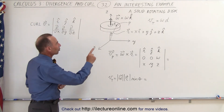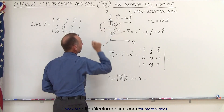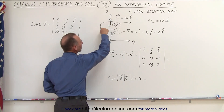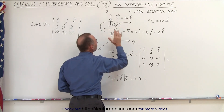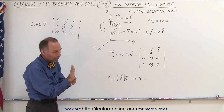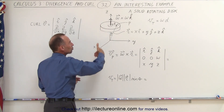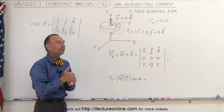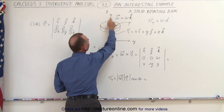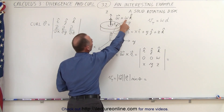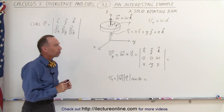Let's say we have a solid rotating disc where the axis of the disc is on the z-axis. The disc is rotating with an angular velocity omega. When we write that as a vector quantity, when we curl our fingers in the direction of rotation, our thumb points in the direction of the vector omega — so that's the angular velocity vector pointing in the z direction with magnitude omega and unit vector k.